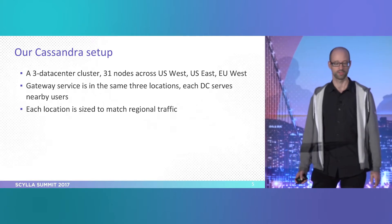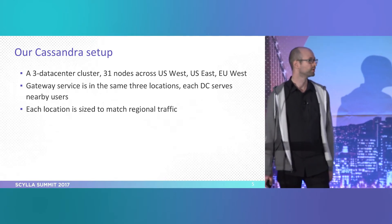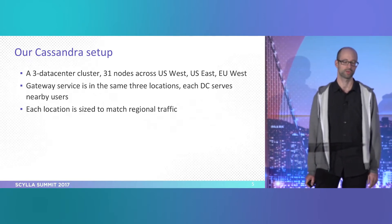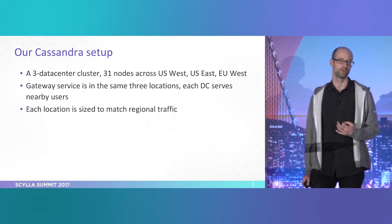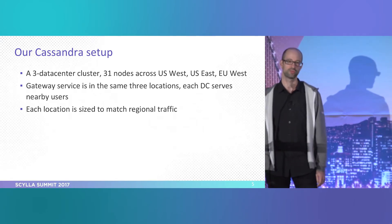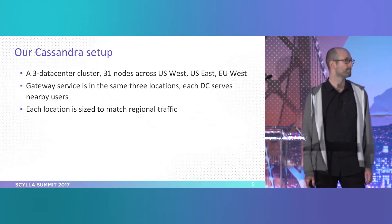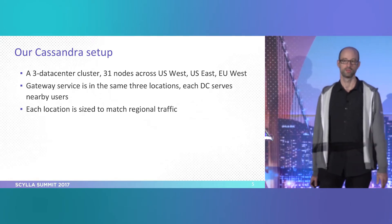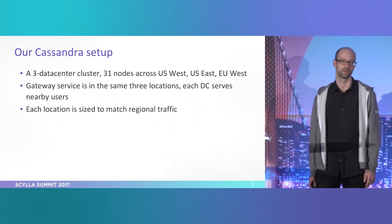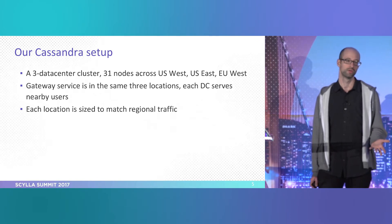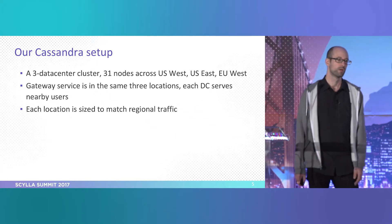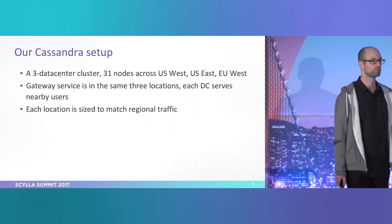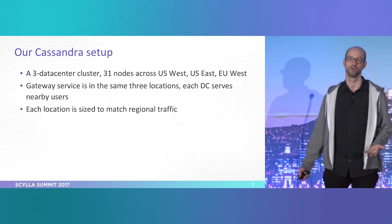Our Cassandra setup has about 30 nodes and is serving a bit above one million read queries per second. We are in the process of transitioning to Scylla. The reason is that sometimes — when load is higher, or even for no reason — the read latency we observe using Cassandra spikes. As I said, that's no good: if it's too slow, it's as good as if we didn't have a database at all. We felt we hit a wall with Cassandra and were unable to tune it to behave in a more reliable way.